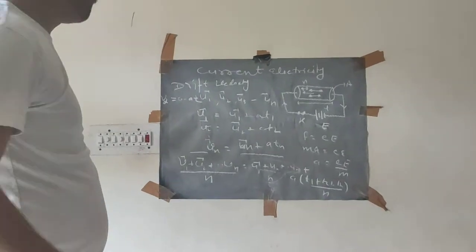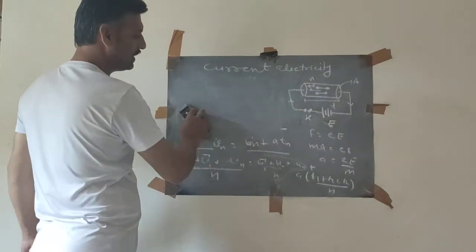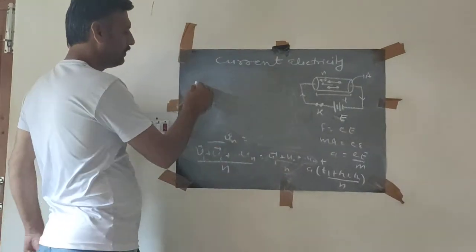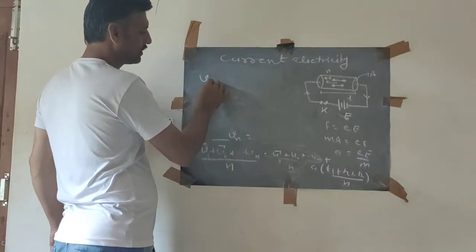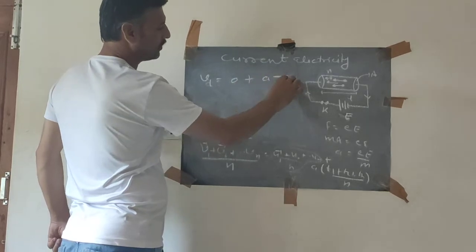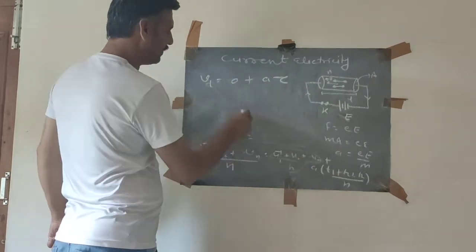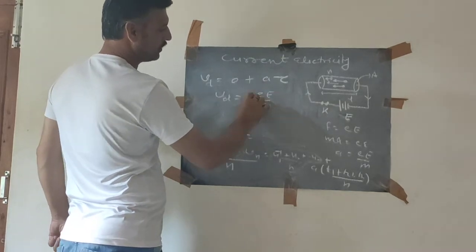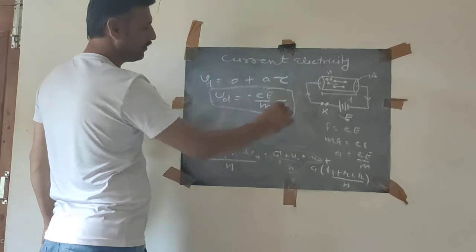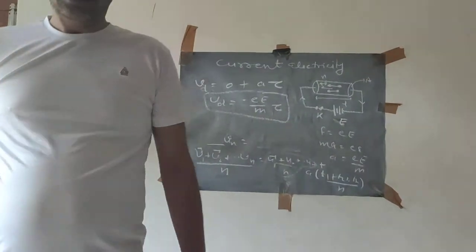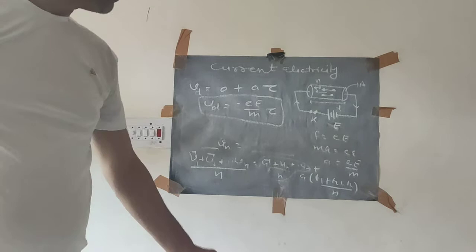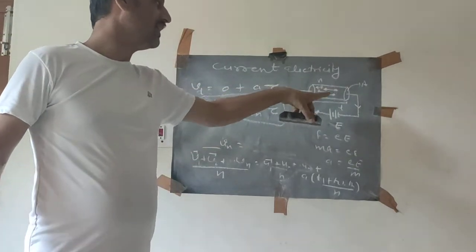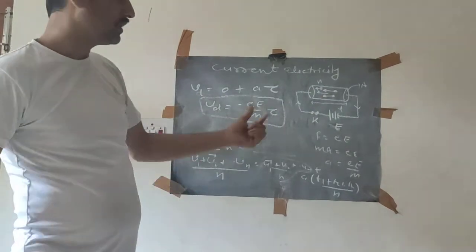Here τ is the relaxation time — the average time between collisions between electrons and molecules. Since acceleration a = eE/m, we can write drift velocity as Vd = eE/m × τ. This is the formula for drift velocity. Initially electrons are randomly oriented in all directions so the vector sum of initial velocities is zero.